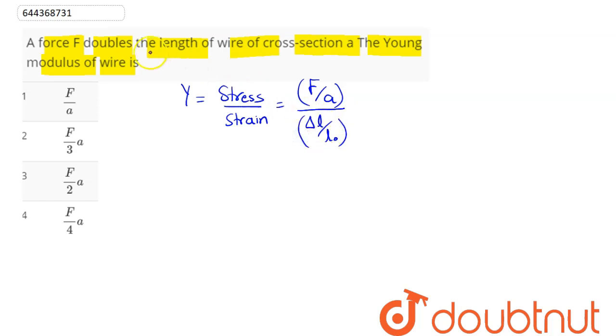Now as per the question, it says doubles the length. Value of delta L comes out as final length minus initial length. We can say final length is 2 times the initial length, therefore 2L0 minus L0 is L0. Hence we have delta L as L0.